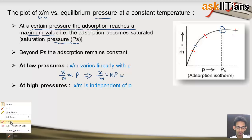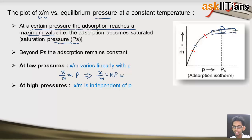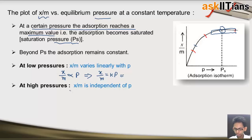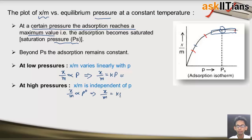At very high pressure, in that region, we see that the extent of adsorption is almost independent of pressure. We keep increasing the pressure but the extent of adsorption remains the same. So we can write x upon m equals k·p^0, meaning x upon m is constant — the extent of adsorption does not depend on pressure.